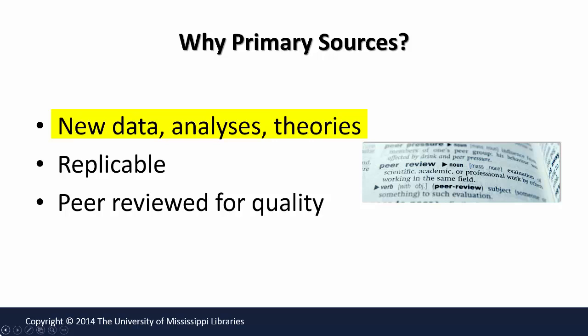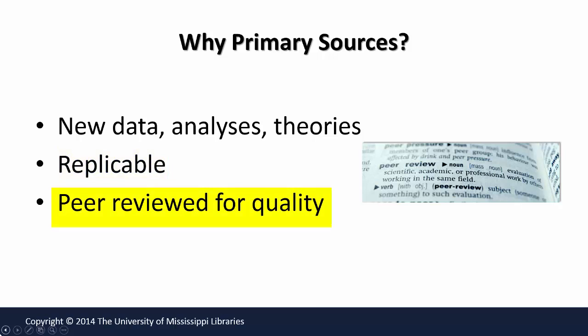The research is presented within the context of the larger picture of other work done in the same field of study. Scientists provide detailed information about how their research was done and what data was collected. This information allows others to try and replicate the research to confirm findings. Scientific articles are published after peer review, which evaluates the quality of the research according to professional standards.